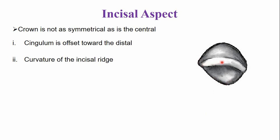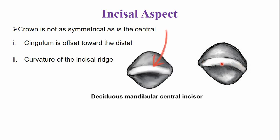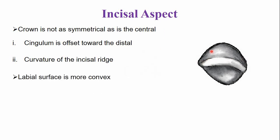There is also a curvature of the incisal ridge that follows the curvature of the mandibular dental arch, whereas in the mandibular central incisor the incisal ridge was straight. The labial surface of the tooth is more convex, and on the distal side the angle is more rounded. The lingual fossa is slightly deeper compared to the central incisor, because the lateral incisor has more development of the marginal ridges and cingulum.